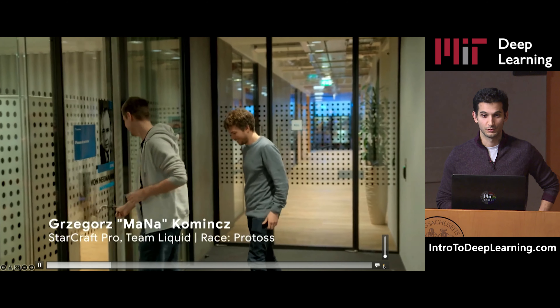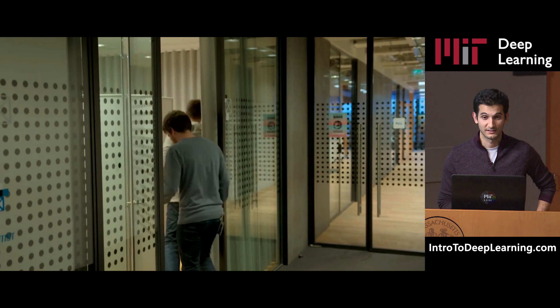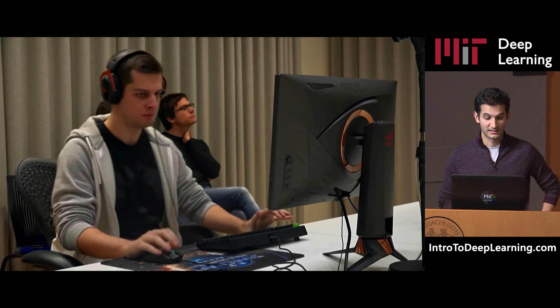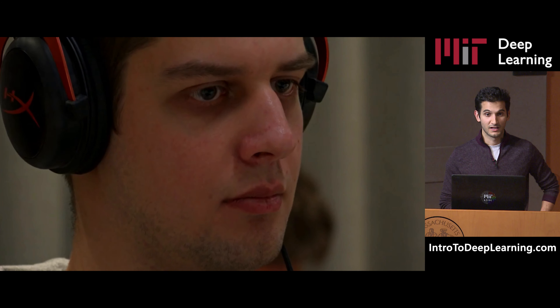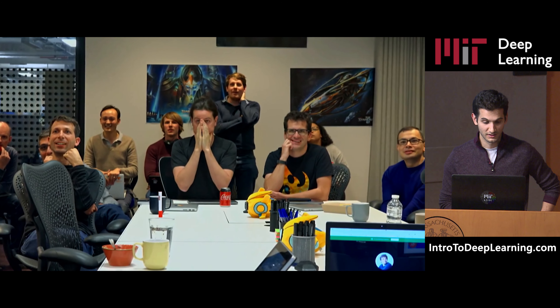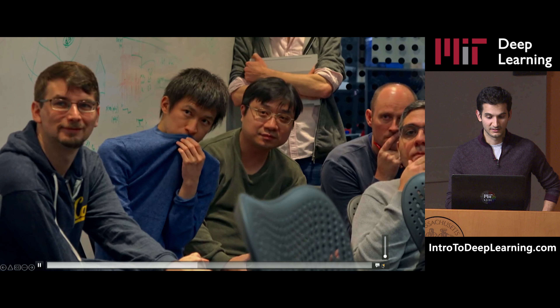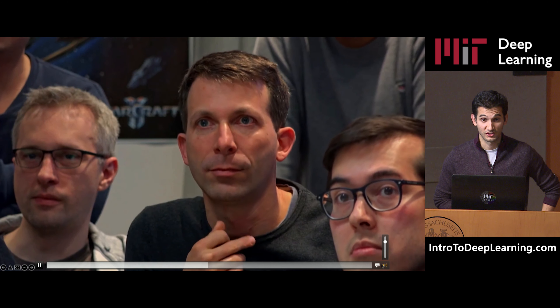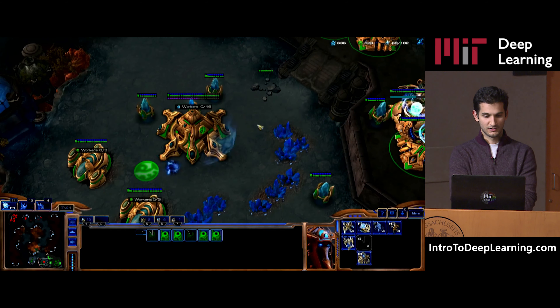Here's an example you may have already seen: a DeepMind algorithm trained to play the game of StarCraft, called AlphaStar. It was competing against some of the top human players. This was a huge endeavor by the algorithm creators and a huge deal when it came out. Let's watch this video for a little bit.